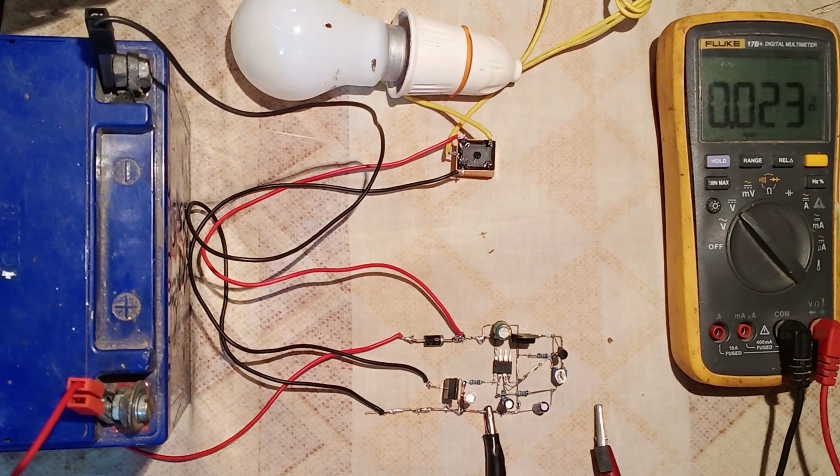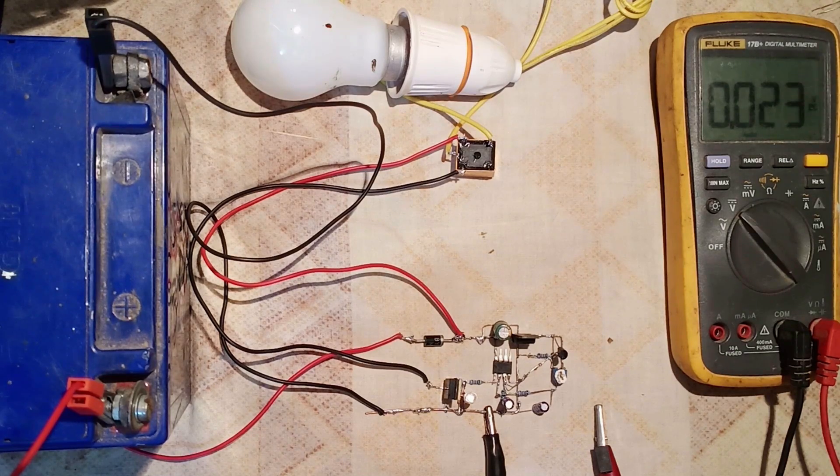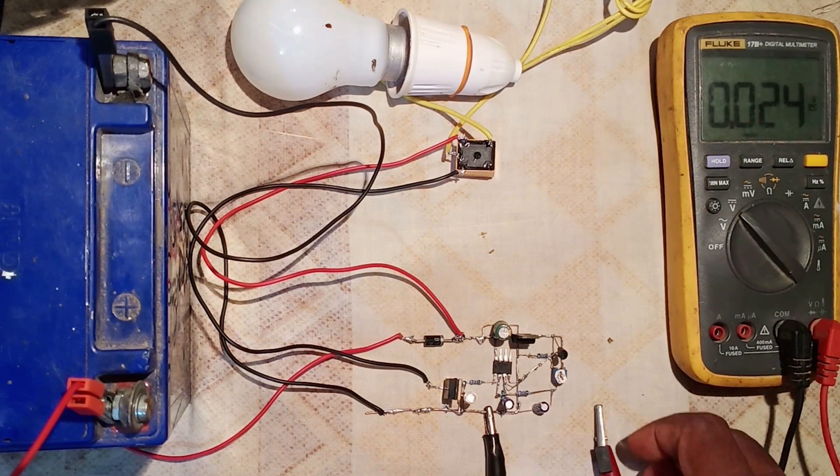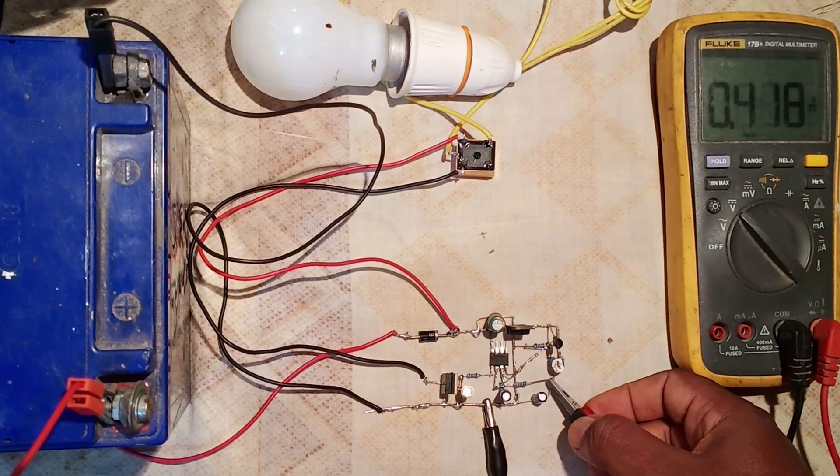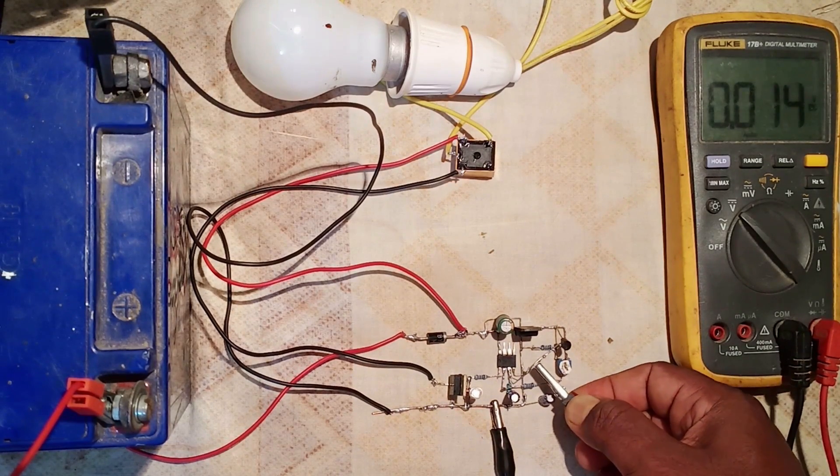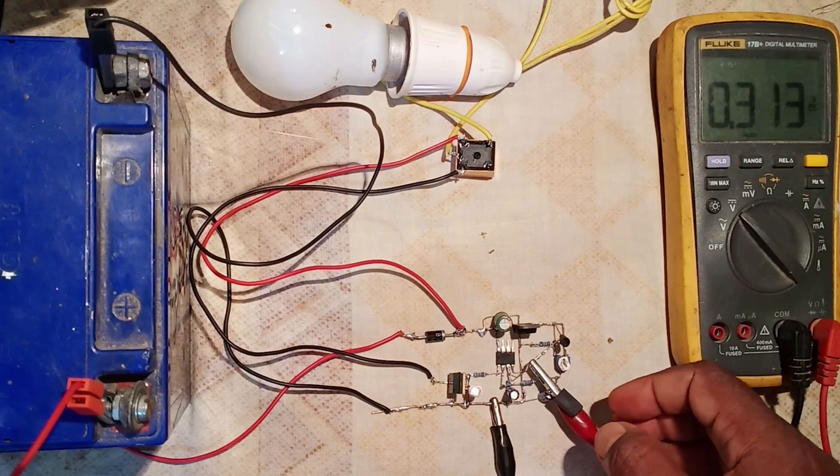Let's see how to set the temperature. In the datasheet of LM35, it is clearly mentioned that it gives 10 mV for the increase of 1 degree temperature in Celsius scale.